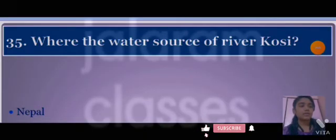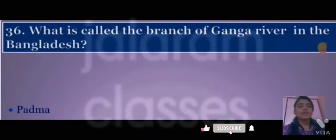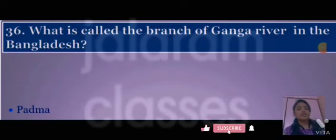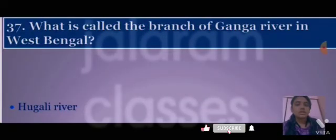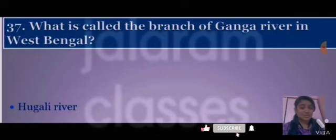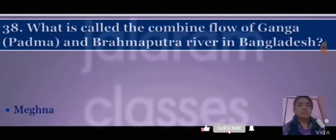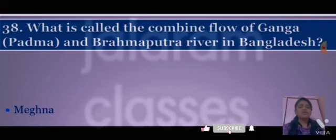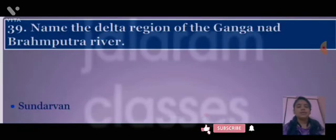What is the branch of the Ganga River in Bangladesh called? Answer: Padma. What is the branch of the Ganga River in West Bengal called? Answer: Hugli River. What is the combined flow of the Ganga and Brahmaputra rivers in Bangladesh called? Answer: Meghna.